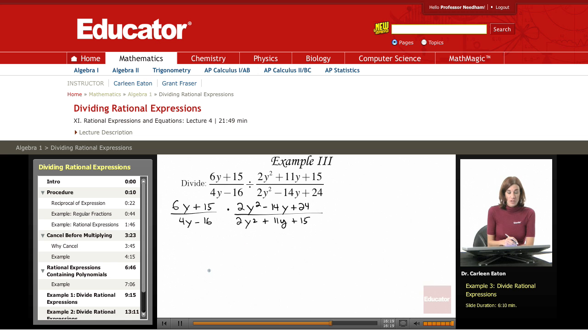Next step after I've found this reciprocal is to factor. For this numerator, I have a common factor of 3. So this becomes 3 times 2y plus 5. And then at the bottom, I have 4y minus 16. So I'm going to factor out 4, and that's going to give me y minus 4.